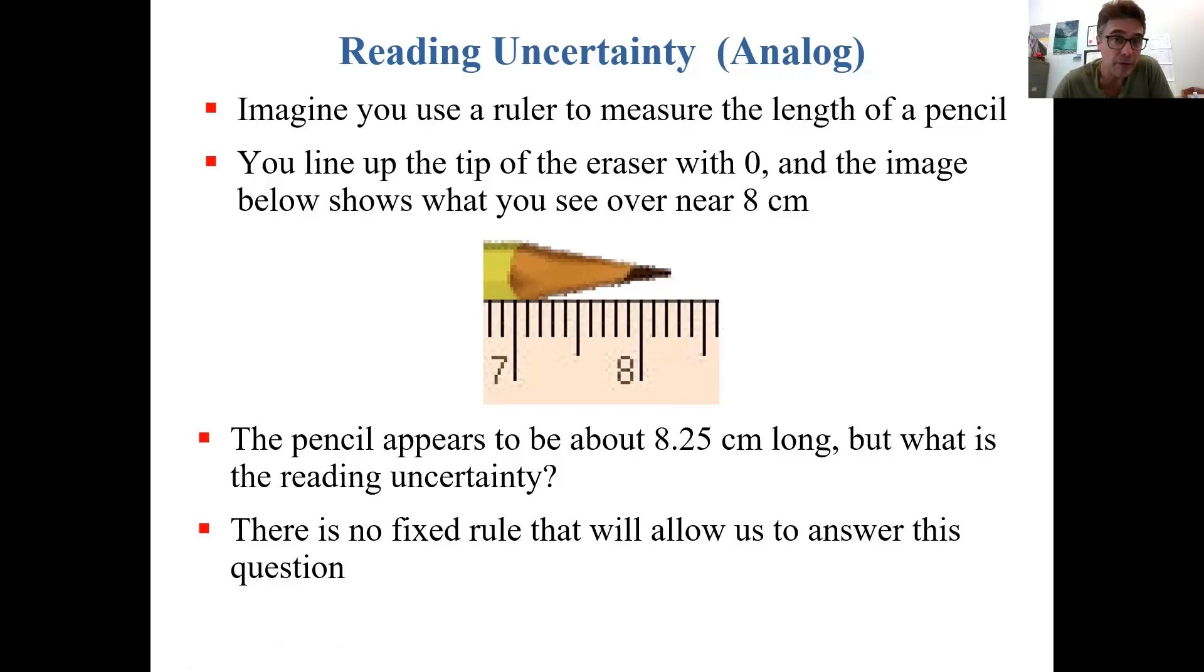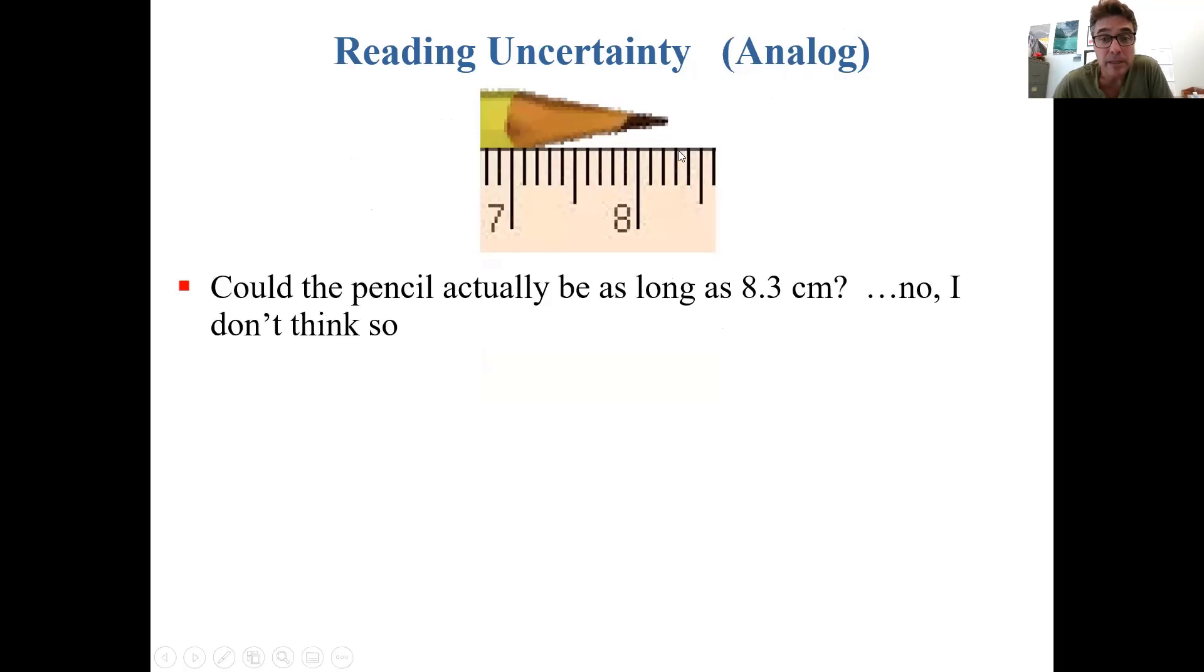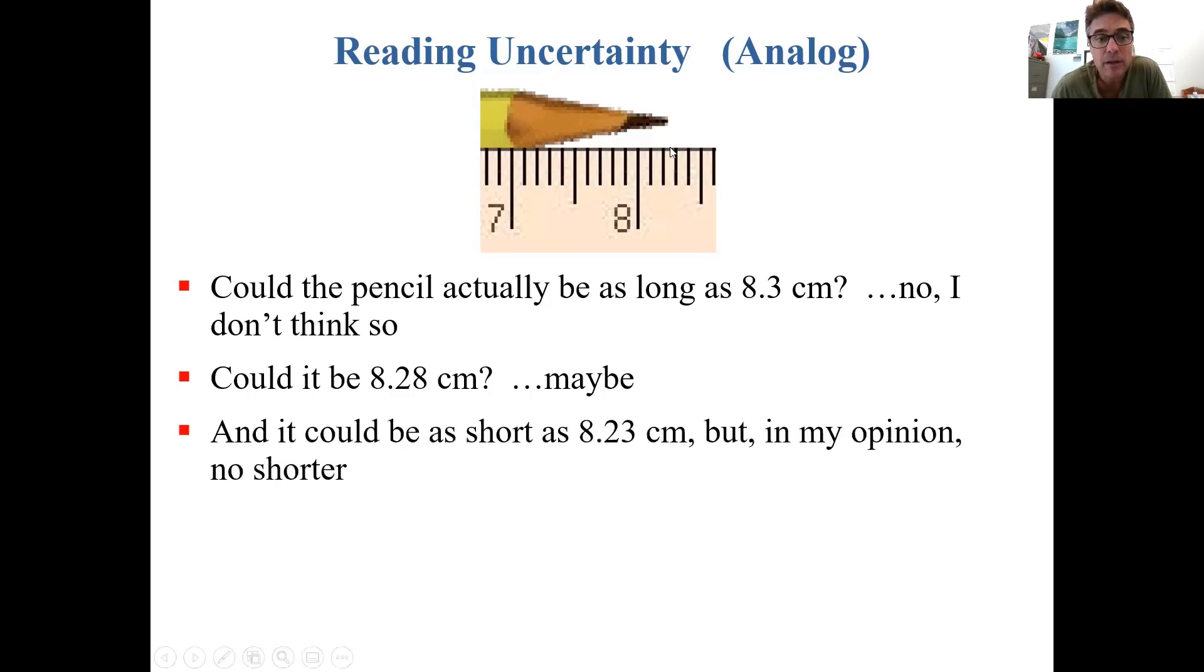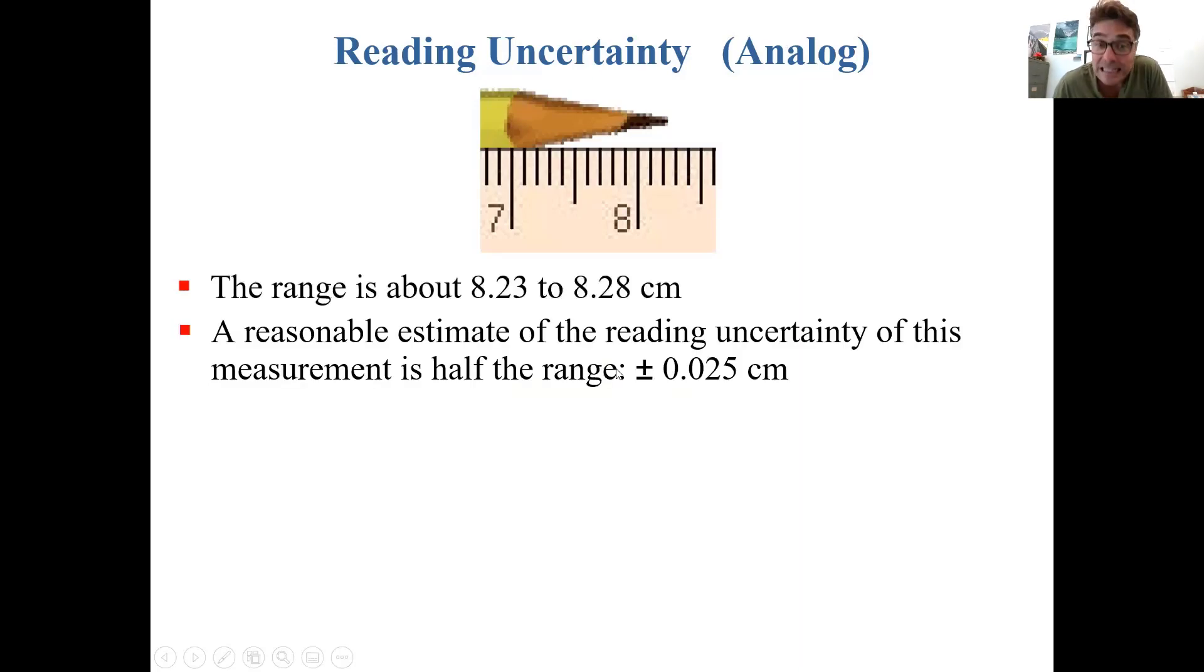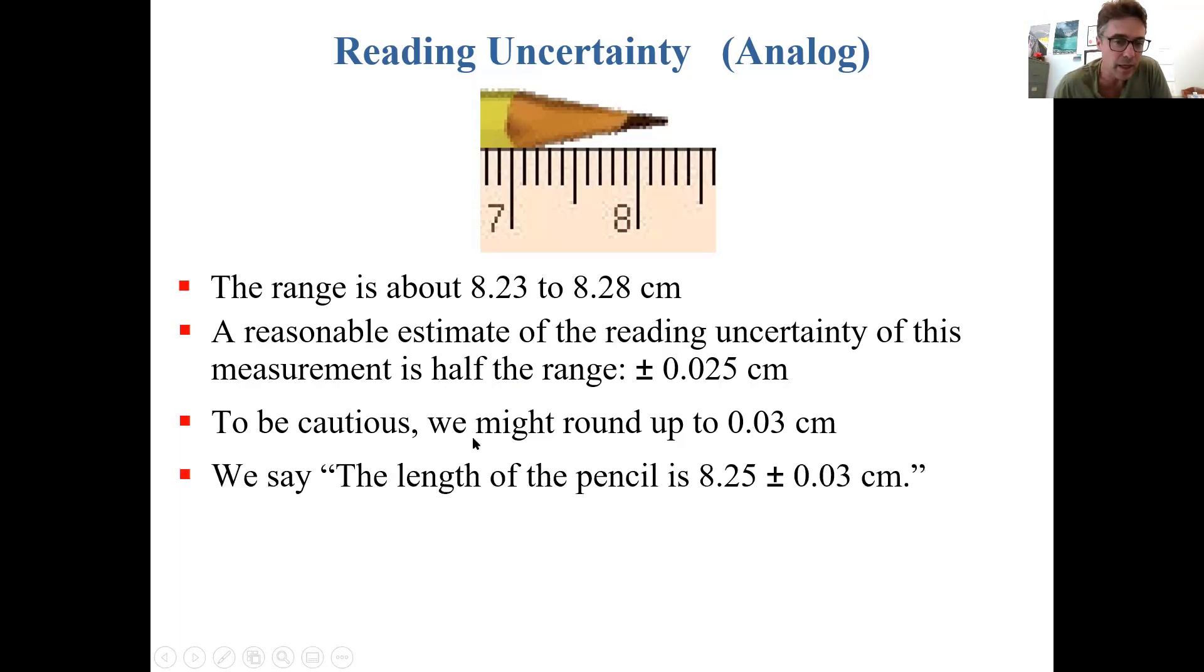There's no fixed rule that allows you to answer this question. You must use your intuition and common sense. Could the pencil be as long as 8.3 centimeters? I don't think it could be that long. Could it be 8.28? Well maybe. And it could be as short as 8.23, but I don't think it's 8.2. So I think the real range here for this fuzzy tip is somewhere like 8.23 to 8.28. We estimate the reading uncertainty to be half this range, so it's plus or minus 0.025 centimeters. To be cautious we might round it up and say 0.03 centimeters is the reading uncertainty. So we would say the length of the pencil is 8.25 plus or minus 0.03 centimeters.